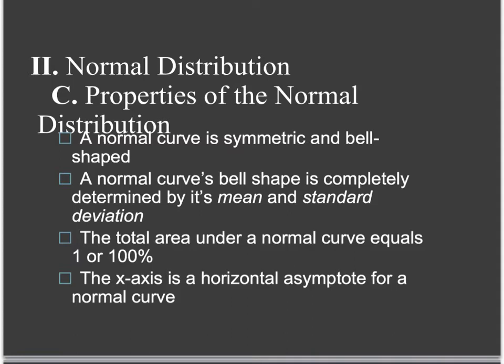Some properties of the normal distribution: it's symmetric and bell-shaped, so it's always going to look something like this. You'll see me draw a lot of bell curves — they're all supposed to look symmetric. The curve's bell shape, whether it's tall and skinny or shorter and flatter and wider, is all determined by the mean and the standard deviation. The total area under a normal curve is 1 or 100%, just like any density curve.